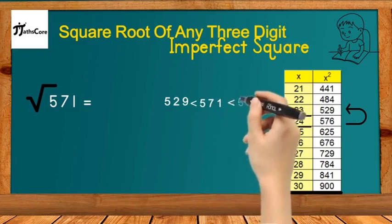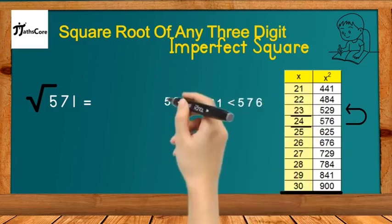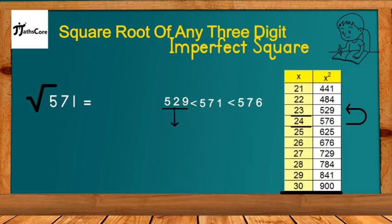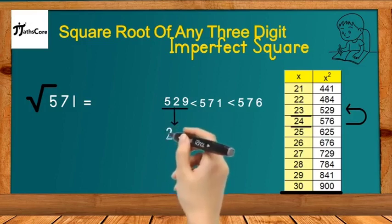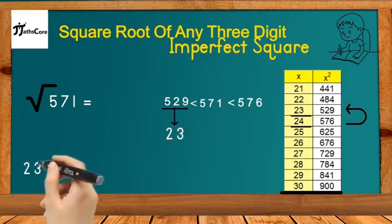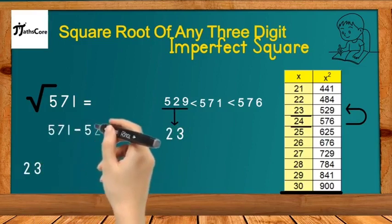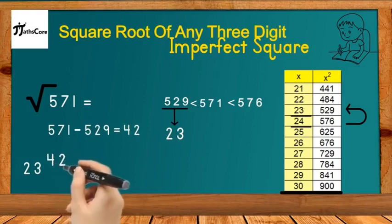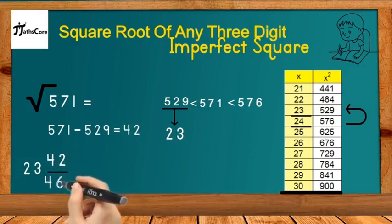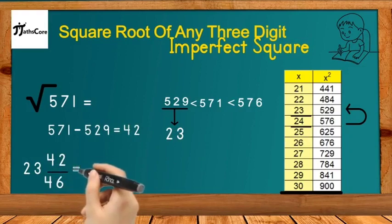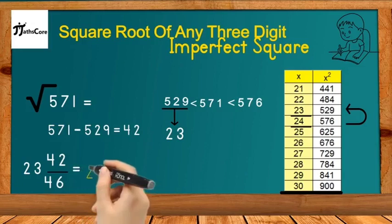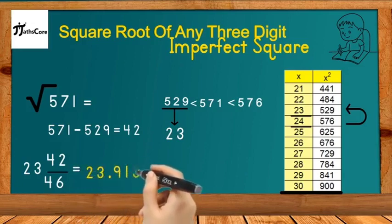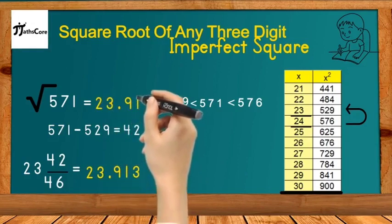We select the smaller perfect square, 529, and its square root is 23, so we write down 23. Then we subtract 529 from 571: 571 − 529 = 42. We write down 42 and divide it by double of 23, which is 46. Simplifying this mixed fraction gives us the decimal answer 23.913, and this is our final answer.